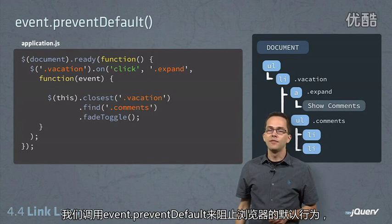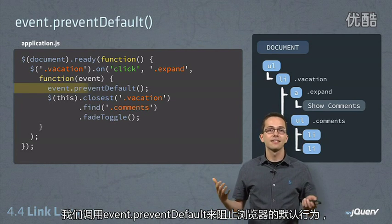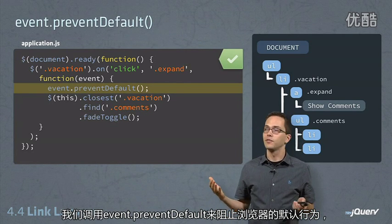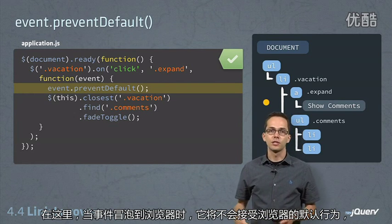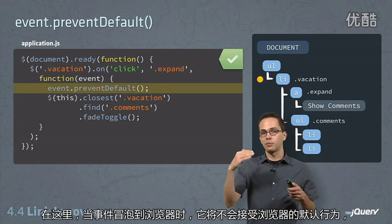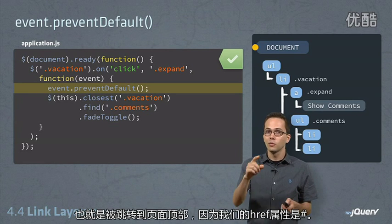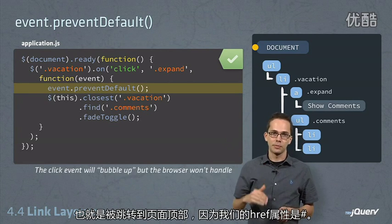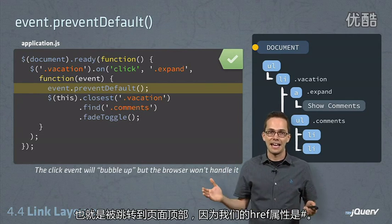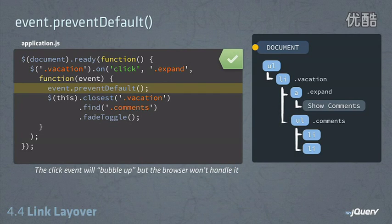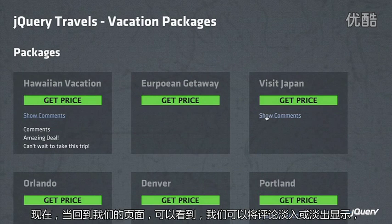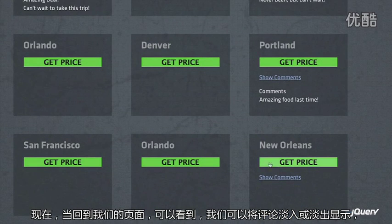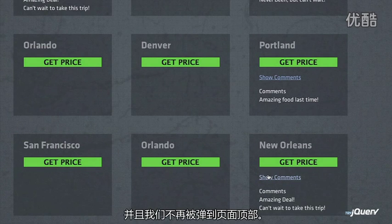Instead, we're going to call event.preventDefault to prevent the default behavior of the browser. In this case, when the event happens, it's going to bubble up, and when it reaches the browser, it's not going to follow the default behavior of popping up to the top of the page because our href was a hash. So now when we go back to our web page, we can see that we can fade in and fade out comments and we're no longer popping up to the top of the page.